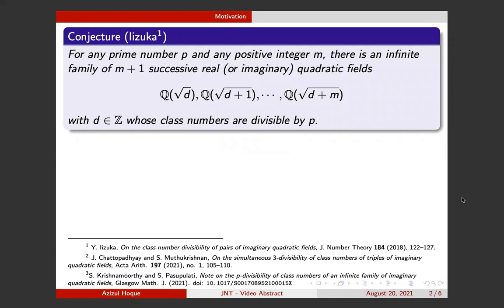I am inspired by this conjecture of Iizuka. It says that for any prime p and any positive integer m, there is an infinite family of m+1 successive real or imaginary quadratic fields of these forms whose class numbers are all divisible by p.